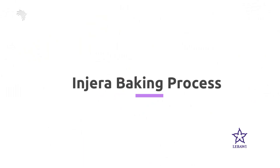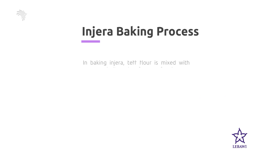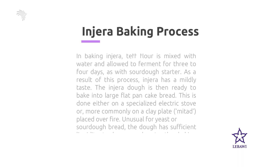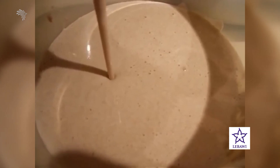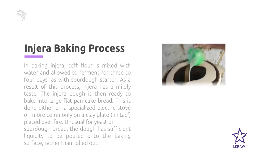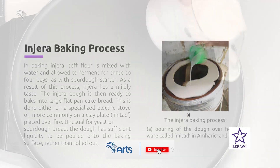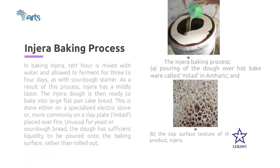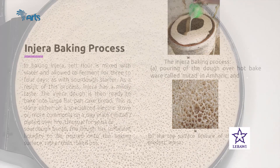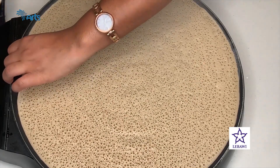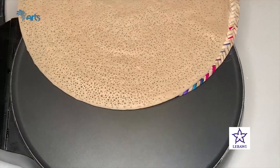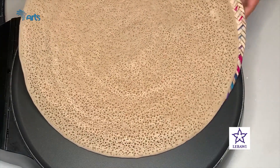Let's come to the injera baking process. First, we need flour and mix it with water, then we have fermentation — we add a starter called irsho in Amharic and wait three to four days for it to ferment. Finally, we pour the batter of teff onto the metad, and after two to three minutes we see the iconic texture of injera. The energy transferred from the metad towards the batter is through the conduction process.